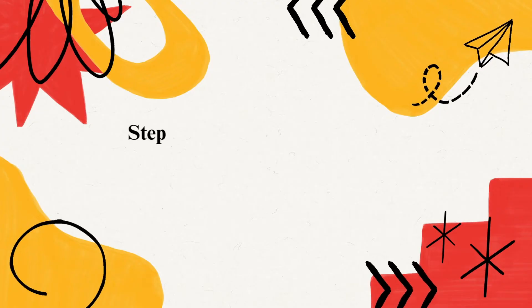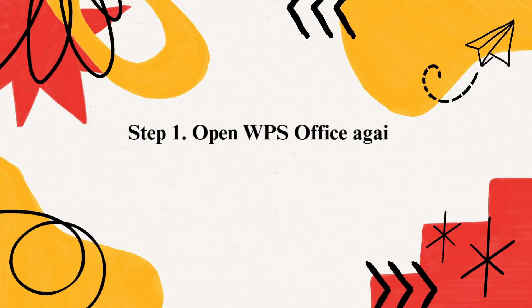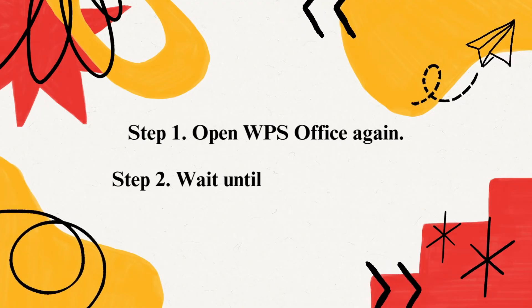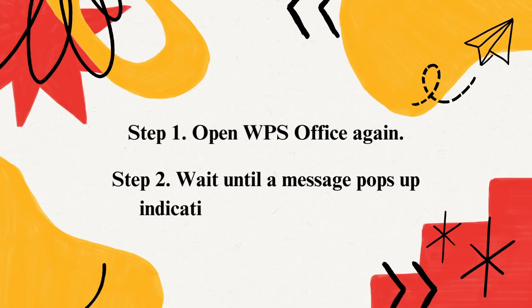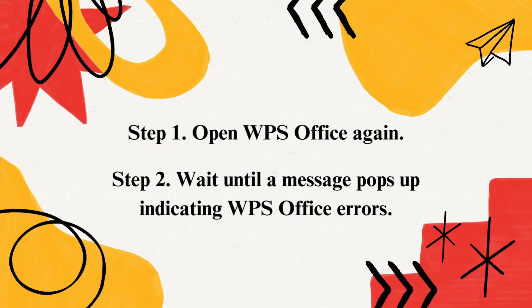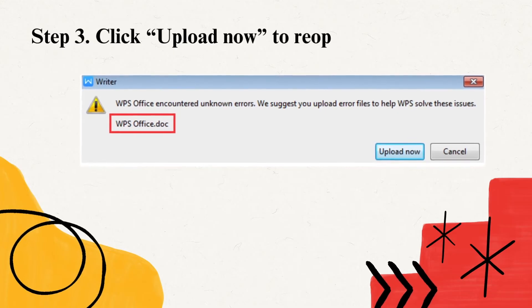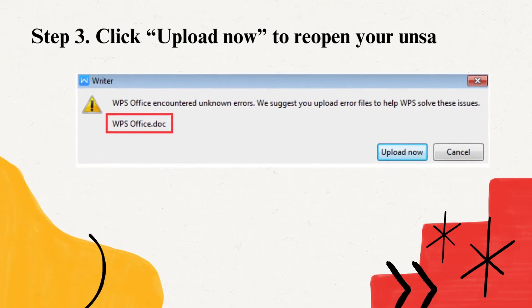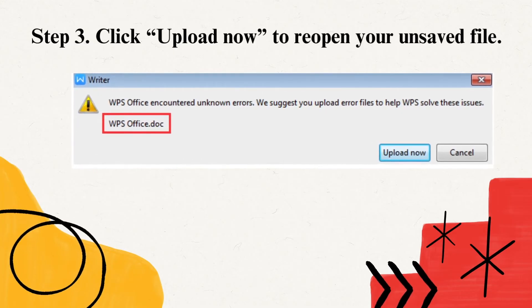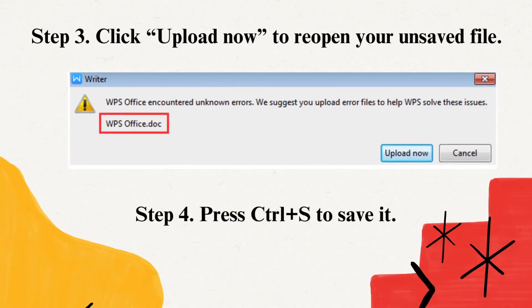Step 1: Open WPS Office again. Step 2: Wait until a message pops up indicating WPS Office errors. Step 3: Click Upload Now to reopen your unsaved file. Step 4: Press Ctrl+S to save it.